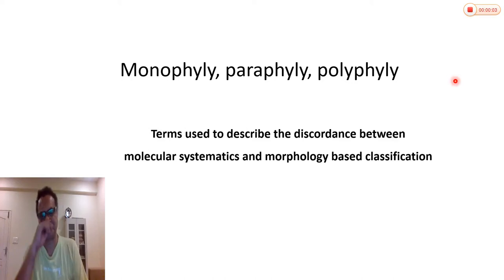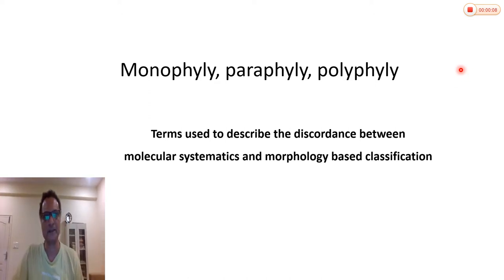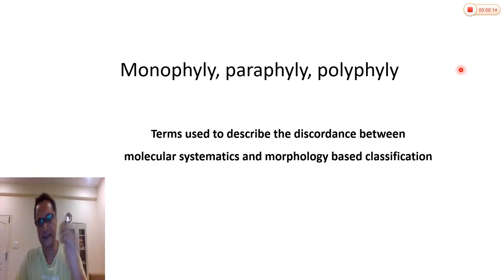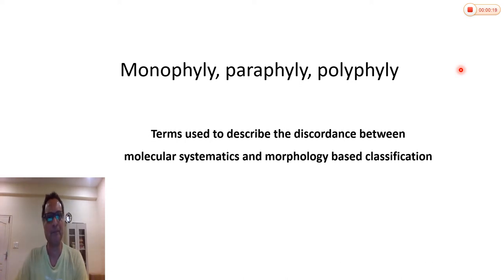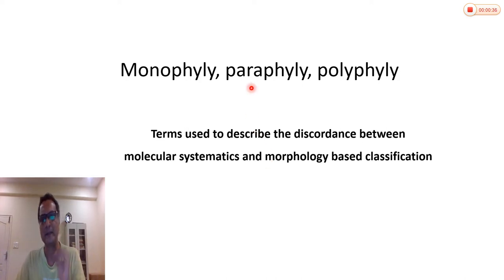Hi everyone. Today I shall talk a little bit about the terms monophyly, paraphyly, and polyphyly. These terms are very often used to describe the discordance between molecular systematics and morphology-based classification. But there is a lot of confusion regarding these terms, particularly paraphyly and polyphyly. So let's see what we can learn about these terms today.